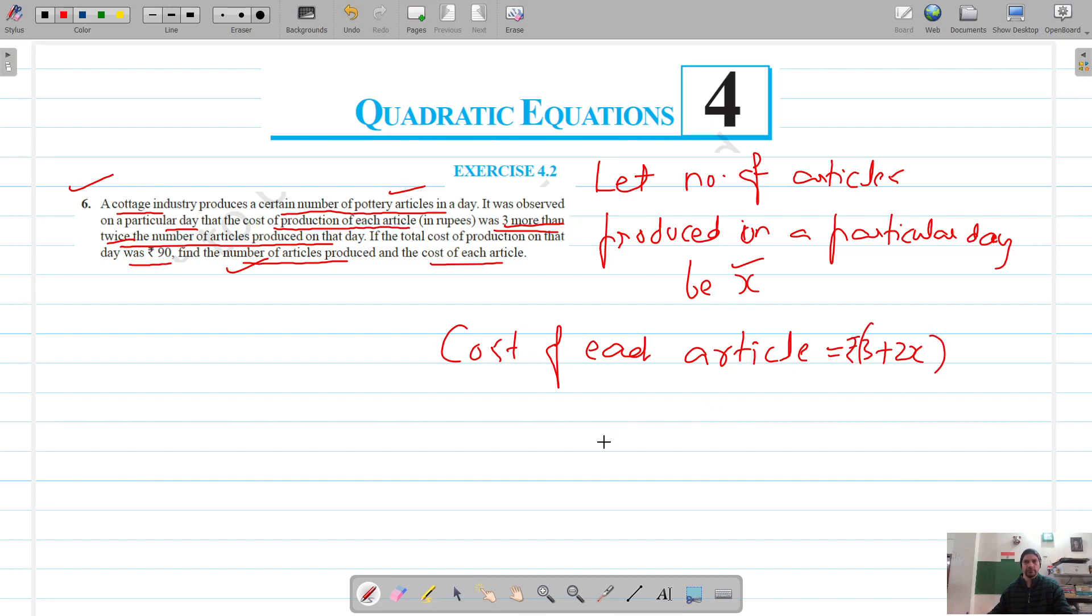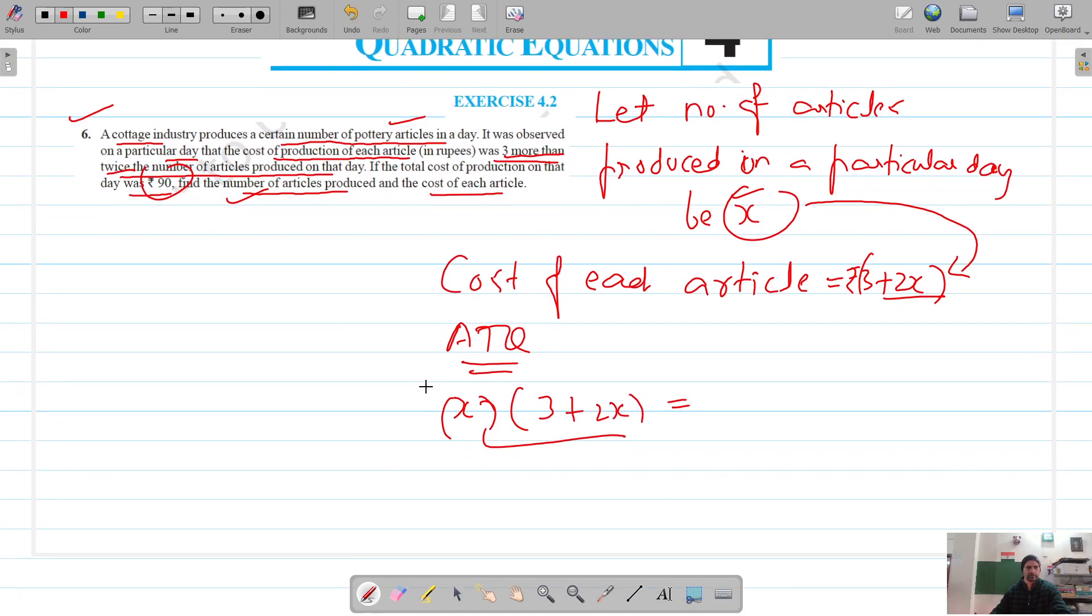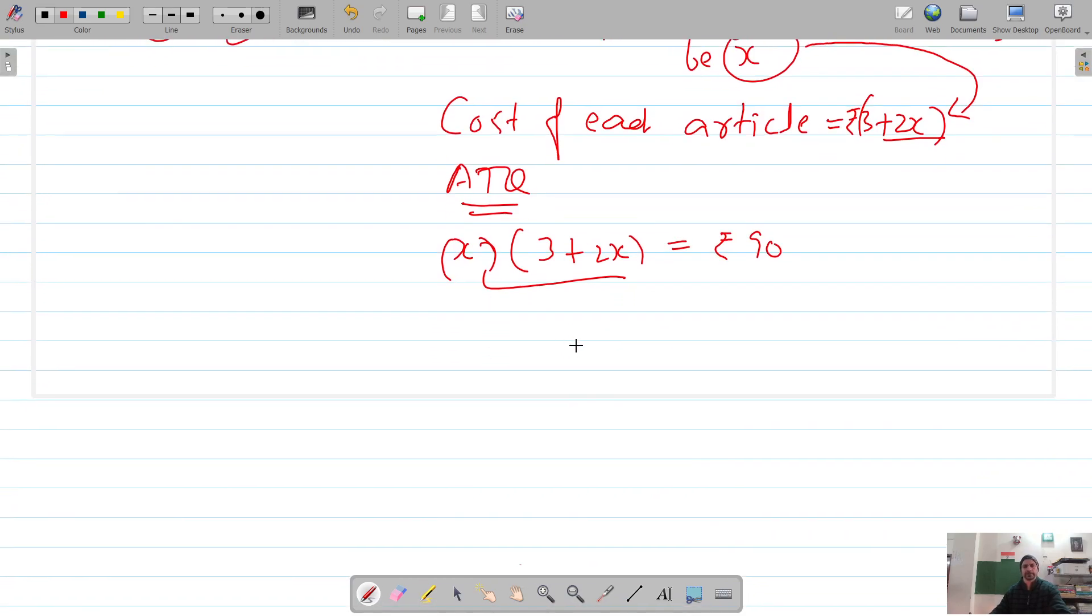According to the question, the total cost of production - number of articles produced were x, so total cost will be x into the price of each article, so that is x into 3 plus 2x. This is the total cost, and the total cost given on that particular day is 90 rupees.